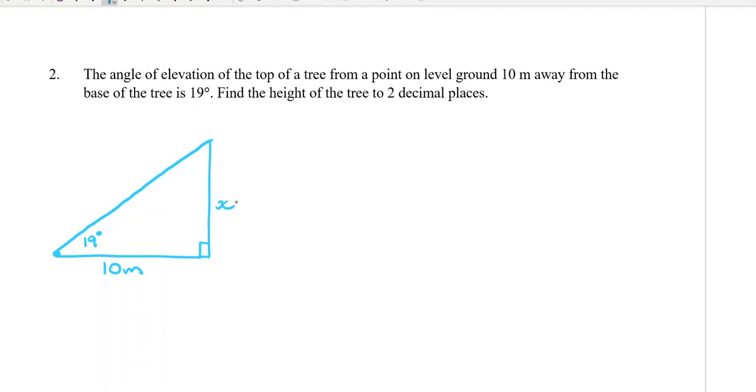Okay, and now we're doing our SOHCAHTOA, so let's label. The hypotenuse is empty, the 10 is the adjacent, and the x is the opposite. So we're using tan again. Tan θ equals opposite over adjacent. Sub in: tan of 19 equals opposite is x, adjacent is 10.